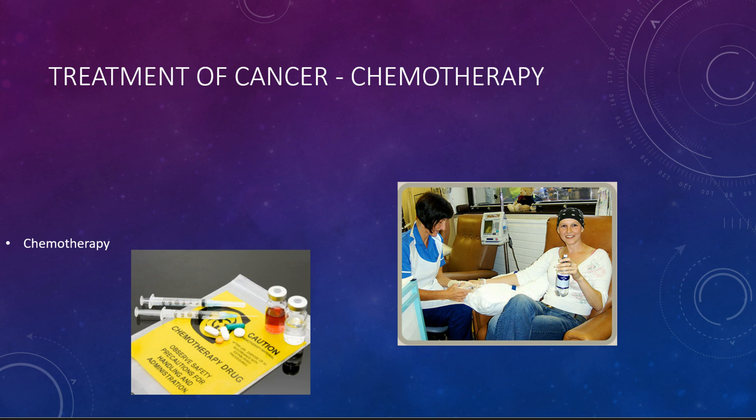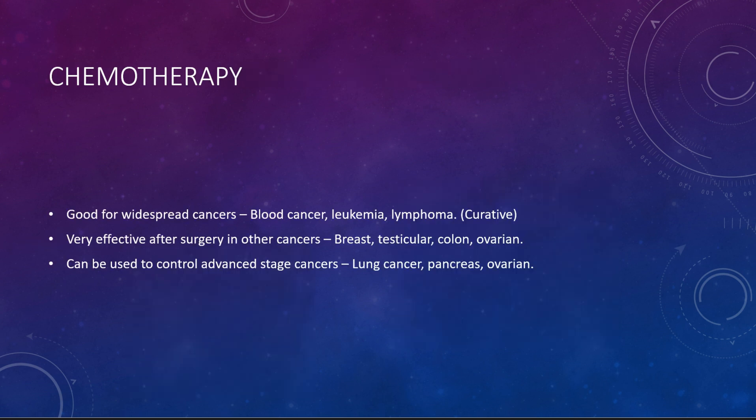When we think of chemotherapy, what are the diseases where it is used? Chemotherapy is very good for the treatment of cancers which are widespread, which have spread throughout the body — like blood cancer, leukemia, and lymphoma. In these diseases, chemotherapy is curative — it cures the patient.